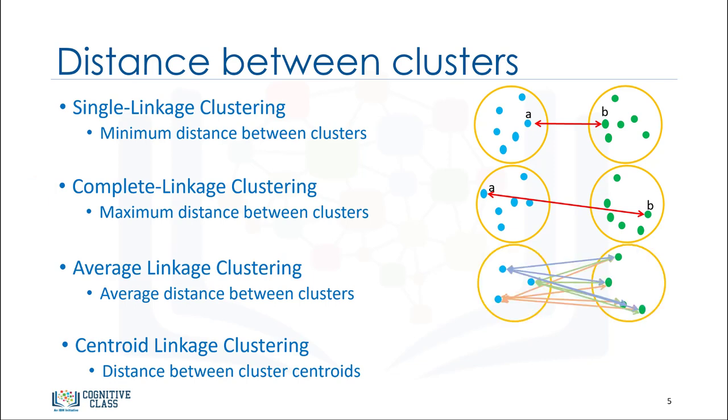The third type of linkage is average linkage clustering, or the mean distance. This means we're looking at the average distance of each point from one cluster to every point in another cluster.